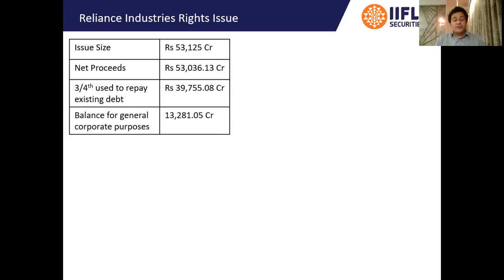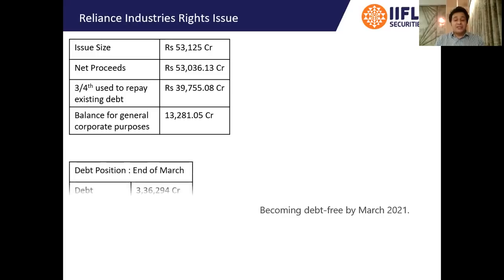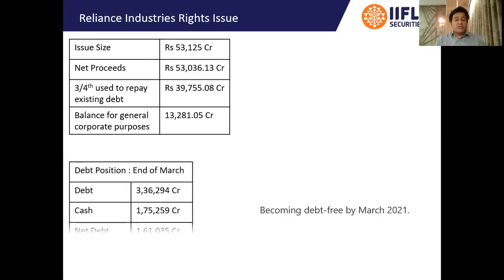At Rs.1,257 per share, the company is expected to raise around Rs.53,000 crores from this rights issue. Most of this money — almost three-fourths — is going to be used to repay its debt, because the ultimate aim of the company is to become completely debt-free by March 2021. Currently there is around Rs.3,36,000 crores of debt on its books, Rs.1,75,000 crores of cash as on end of March 2020, making the net debt Rs.1.61 lakh crores, which they are planning to bring to zero by March 2021.